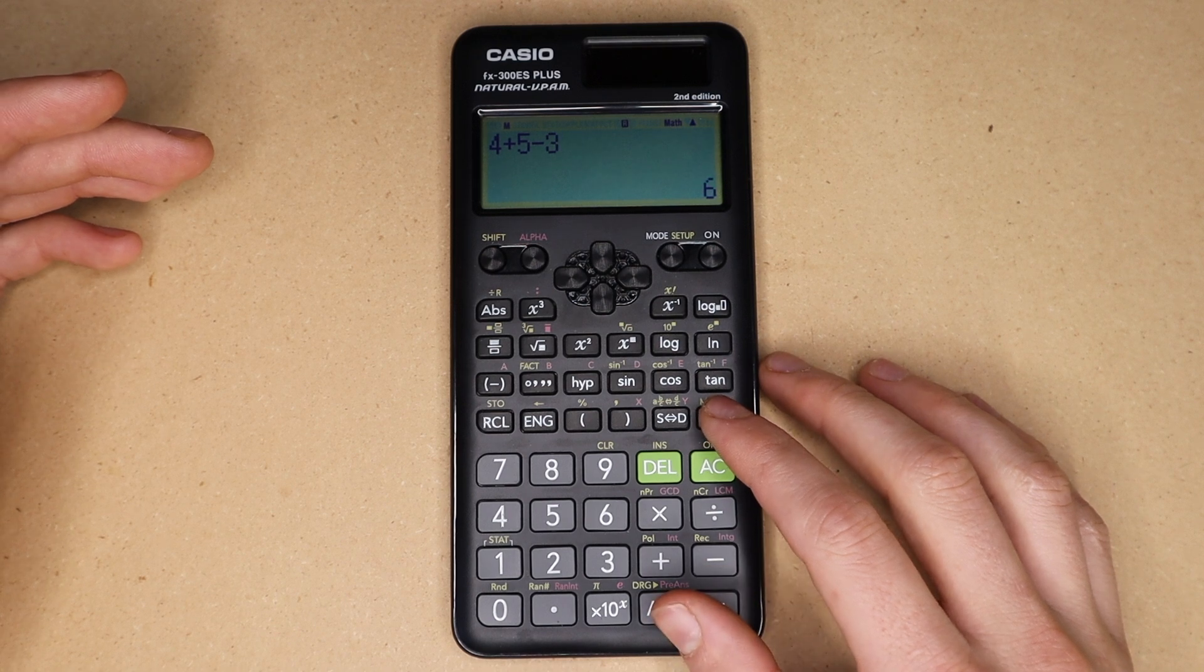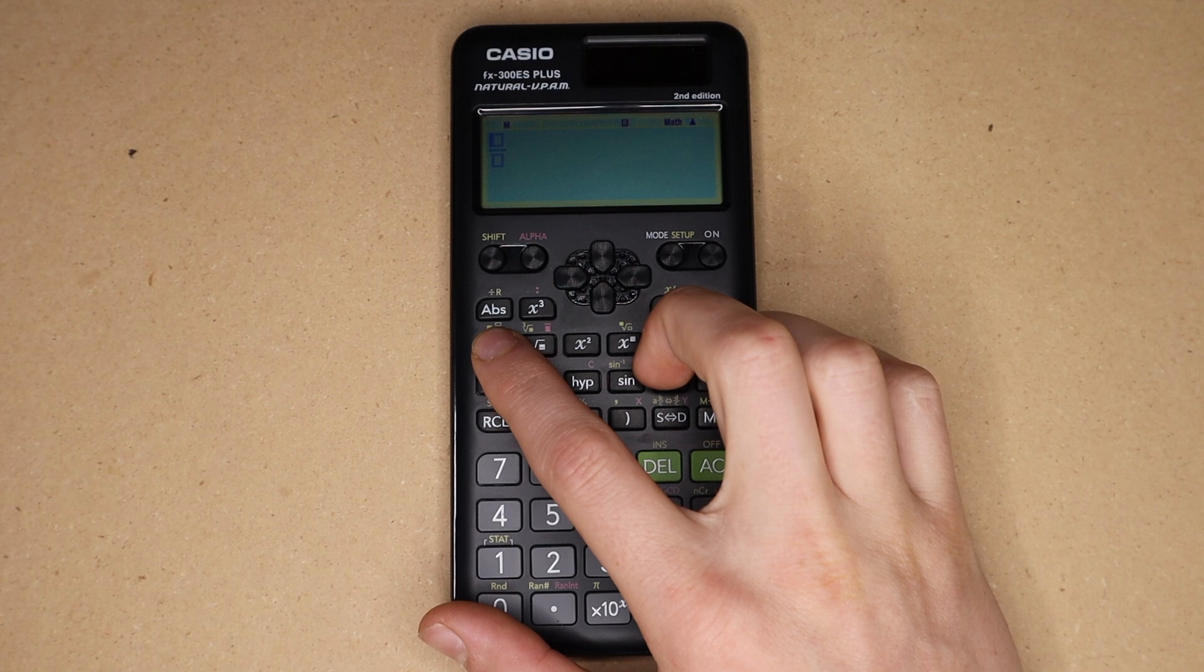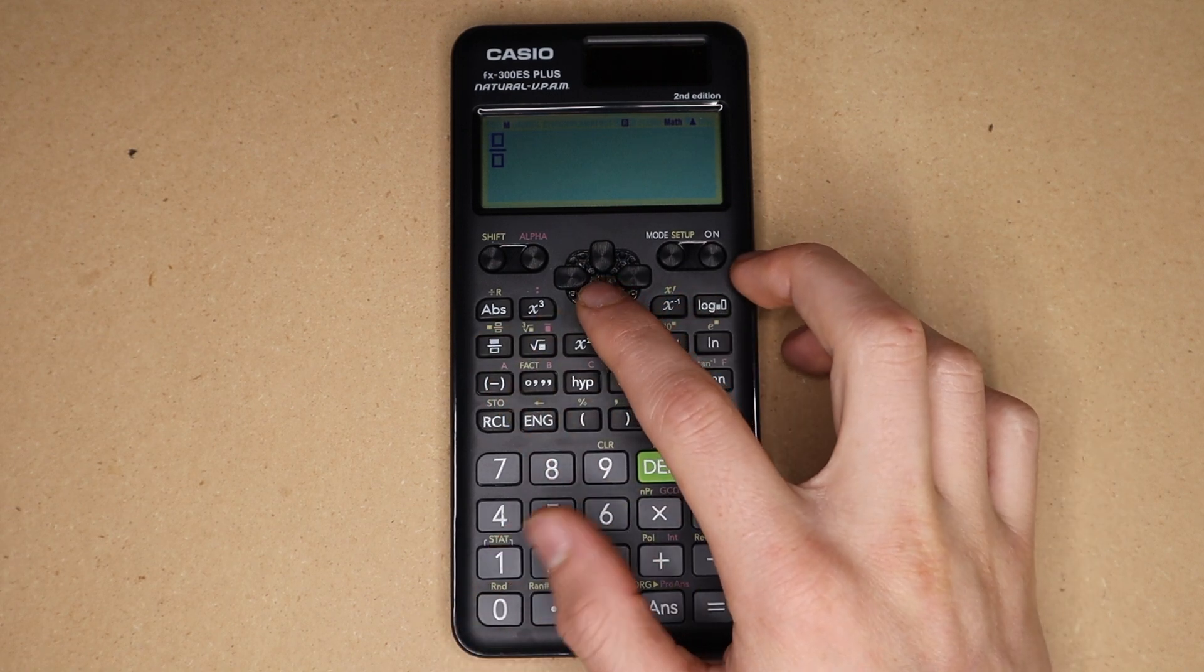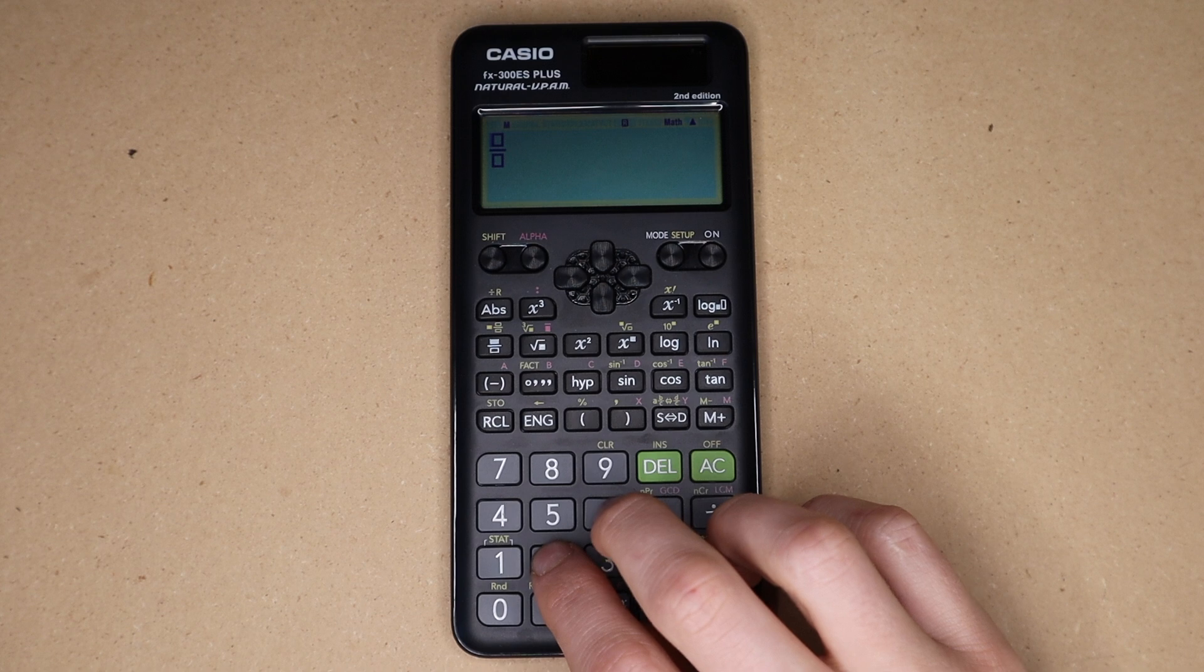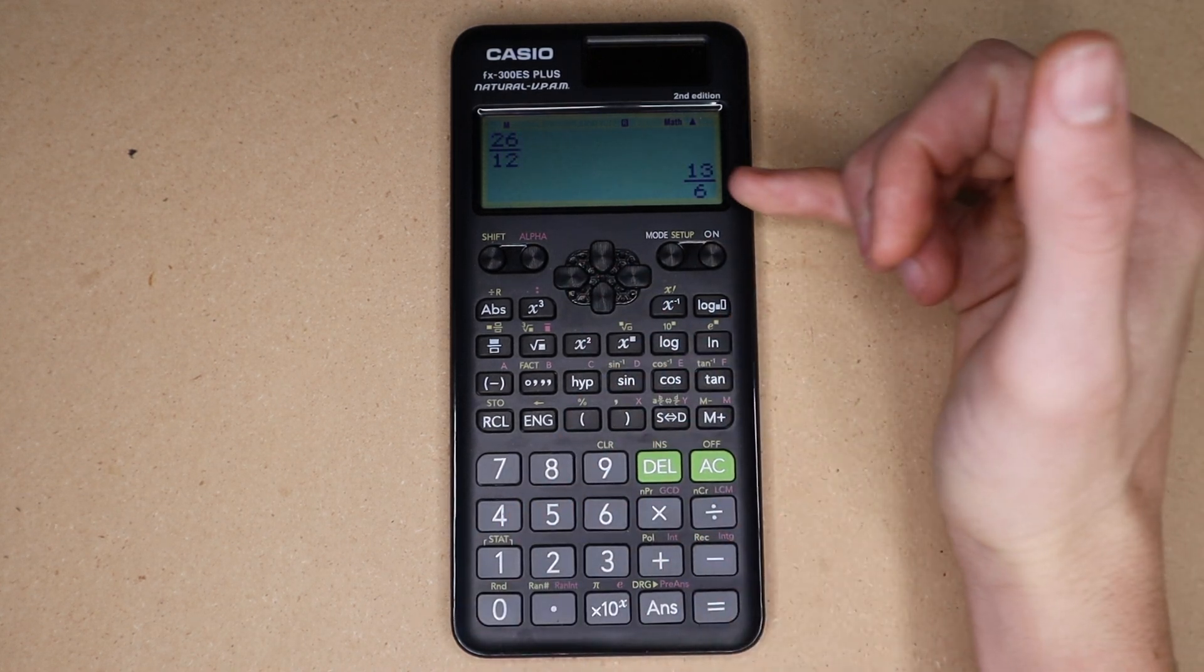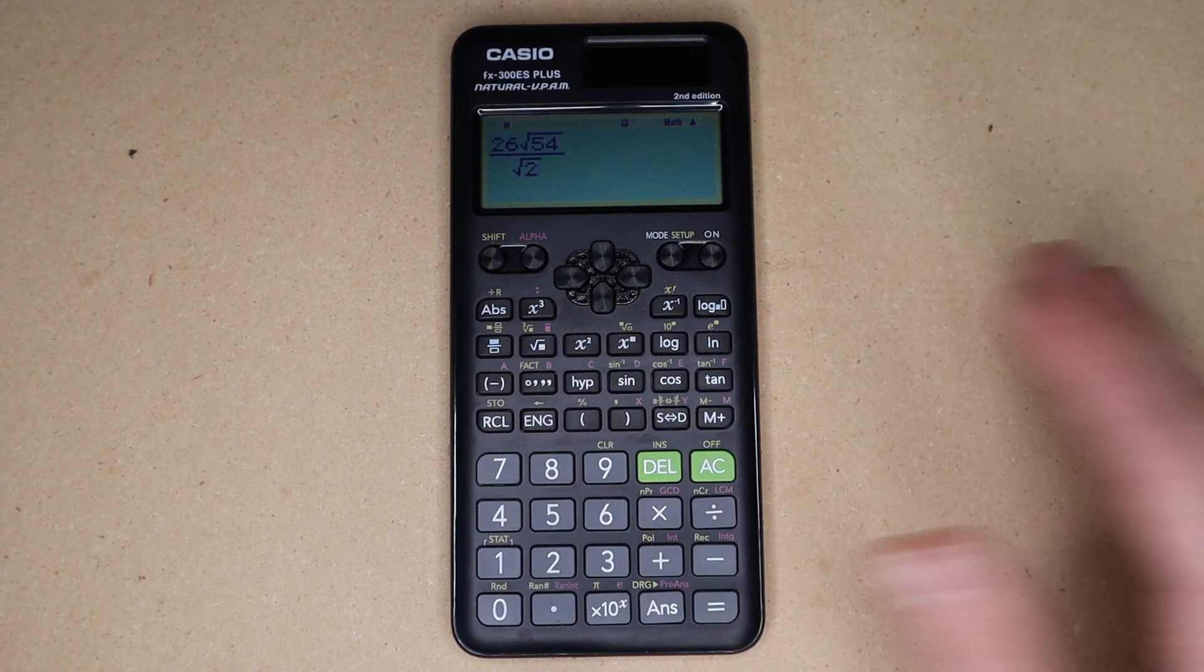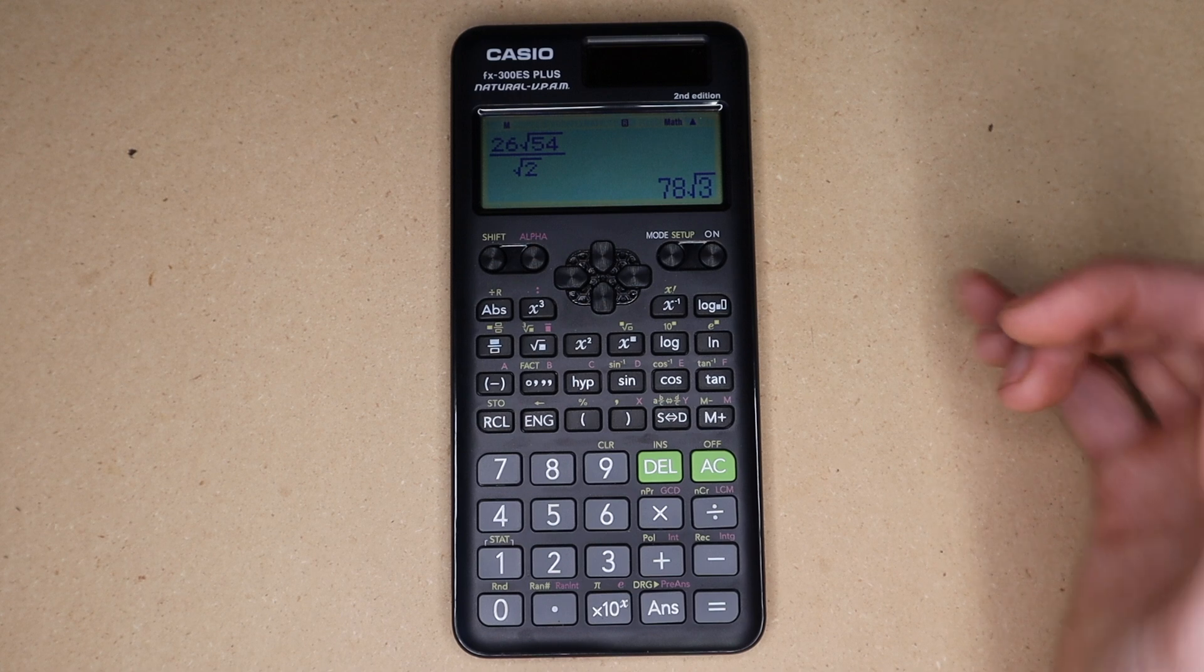In my opinion one of the best things that this calculator has going for it is that you get fraction templates and square root templates and things like that. Almost anything you enter it will give you the answer in exact simplified form. This goes for fractions and any sort of square root - it will give you the simplest exact form of those expressions.